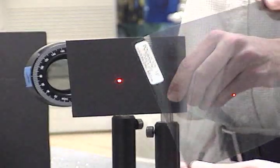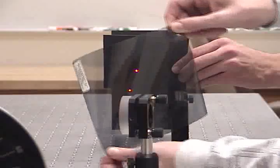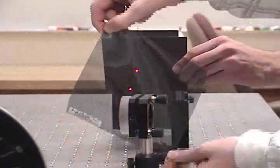Using the polaroid film, we can no longer extinguish the beam, showing that it has become elliptically polarized.